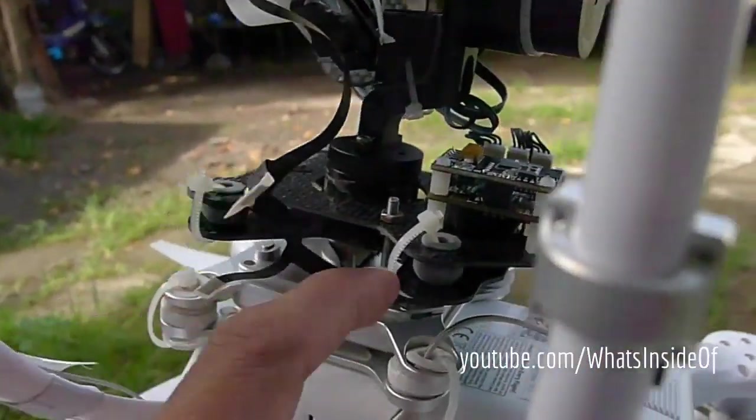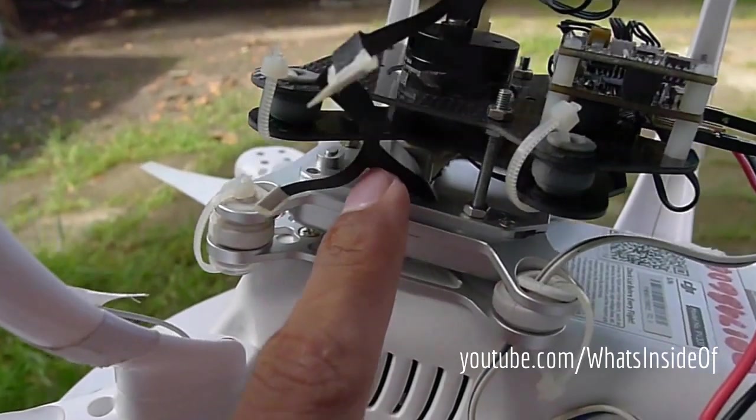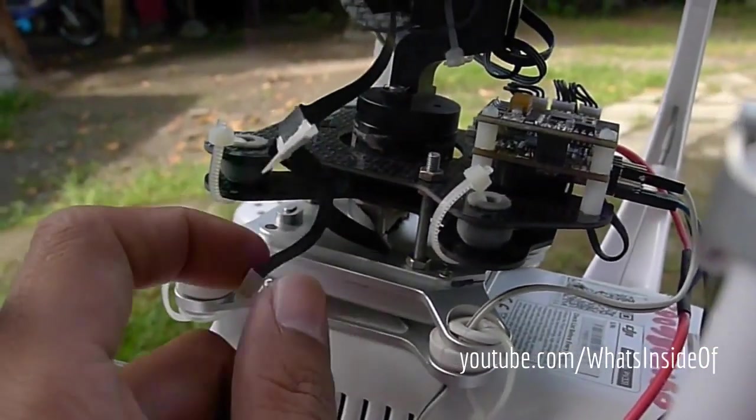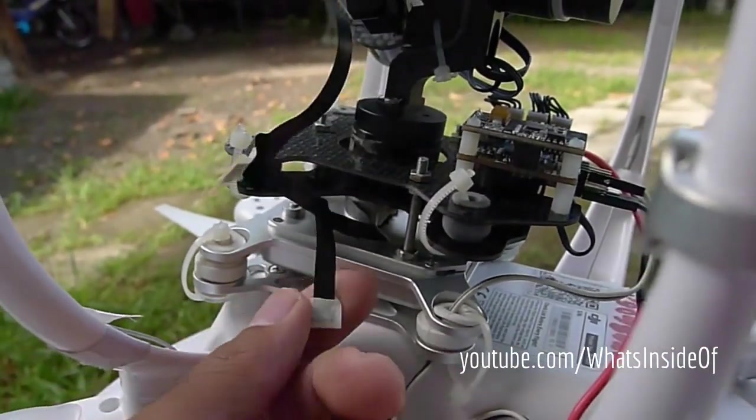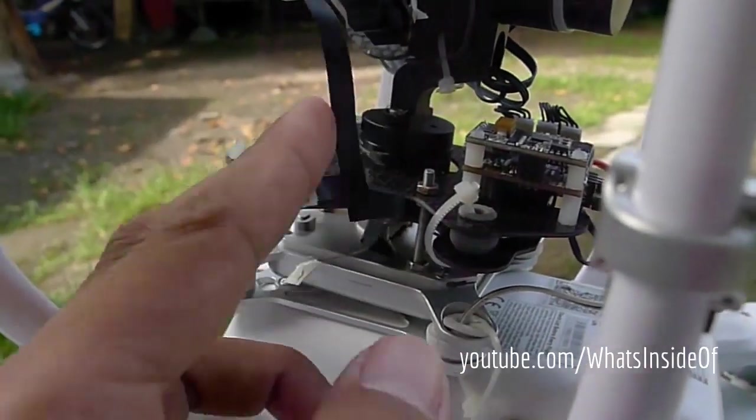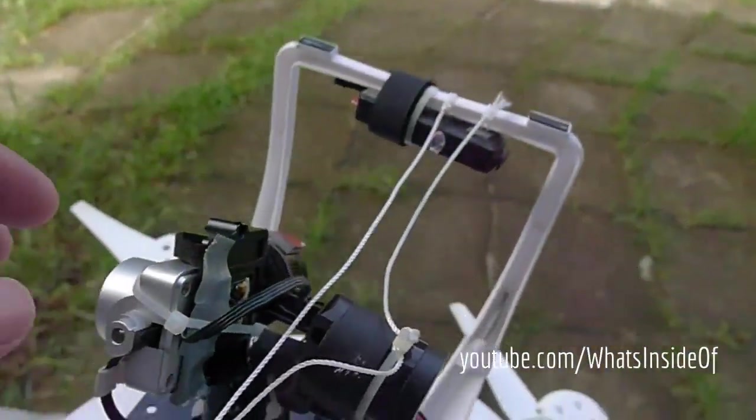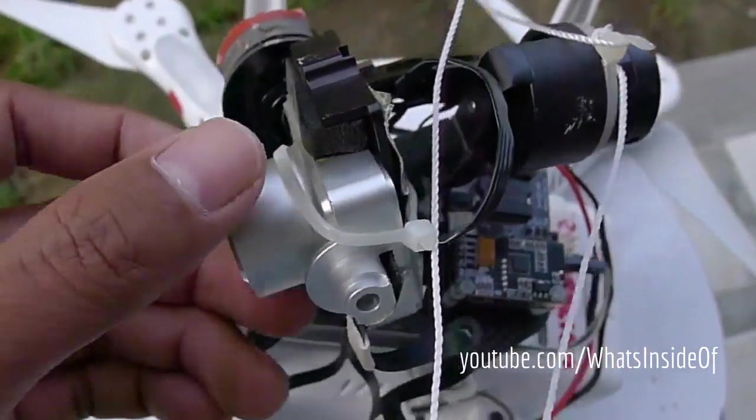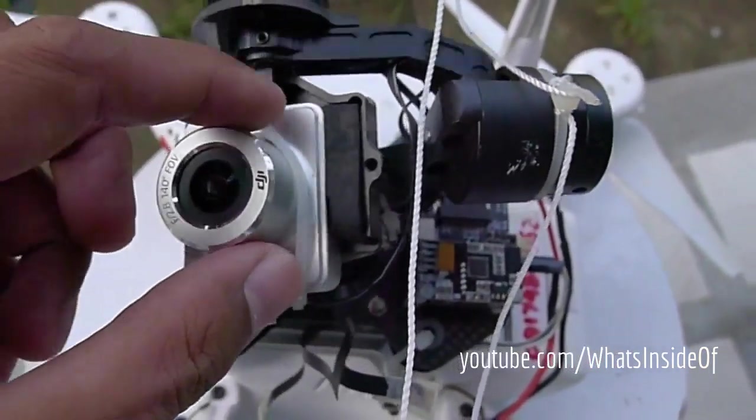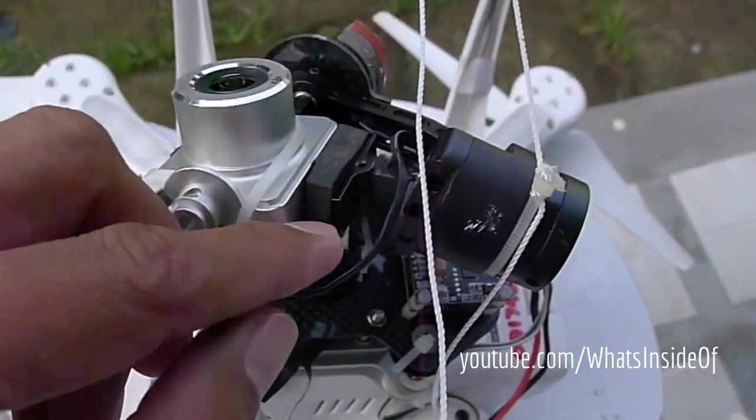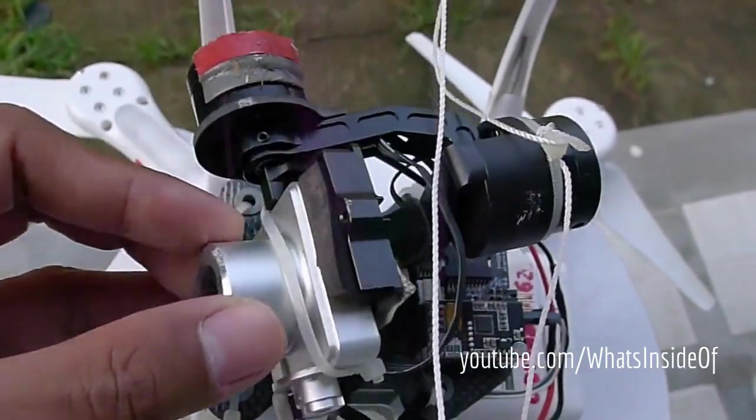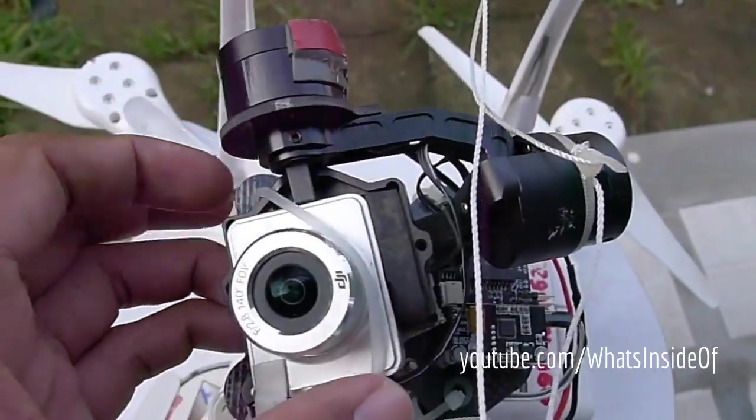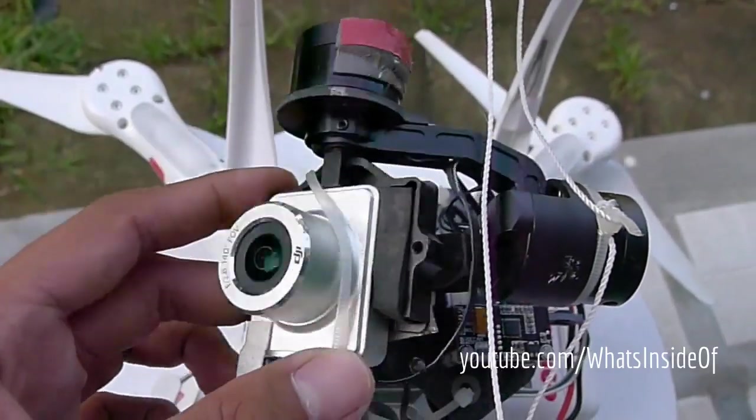I'm still using the original flat ribbon cable - this is for the second gimbal motor, and I attached it to the main camera using a plastic tie. Then a small rubber here holds it firmly to the GoPro mounting base plate there.